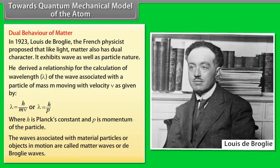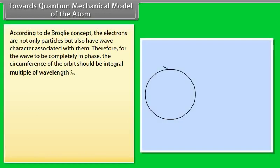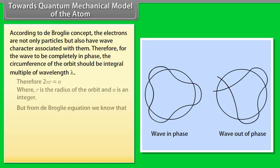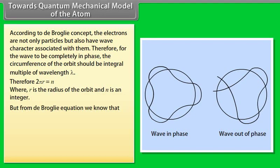The waves associated with material particles or objects in motion are called matter waves or de Broglie waves. According to the de Broglie concept, electrons are not only particles but also have wave character associated with them. Therefore, for the wave to be completely in phase, the circumference of the orbit should be an integral multiple of wavelength lambda. From the de Broglie equation, lambda = h/mv, hence 2πr = n(h/mv), where mvr = n(h/2π).